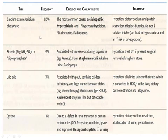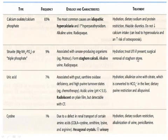Also give penicillamine for cystine stones. Treatment overview: hydration is the basis for every stone type. For calcium oxalate, restrict dietary sodium and protein, and give thiazide diuretics. For struvite, surgical removal of staghorn stones may be needed. For uric acid and cystine, alkalinize the urine. Remember allopurinol for uric acid, and penicillamine for cystine.